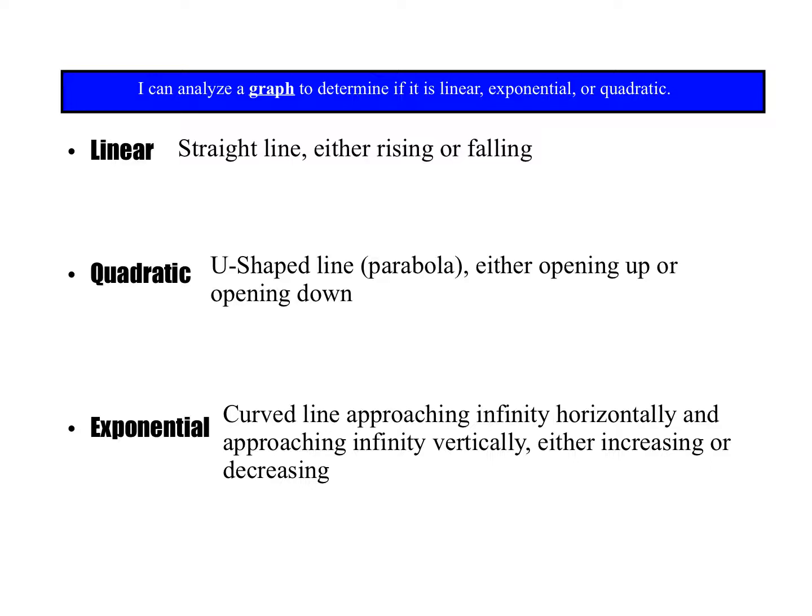A linear function is a straight line — you should be familiar with that — it's either rising or falling. A quadratic is that U-shaped curve we call a parabola, and it either opens up (positive) or opens down. Exponential is a curved line approaching infinity horizontally and approaching infinity vertically.